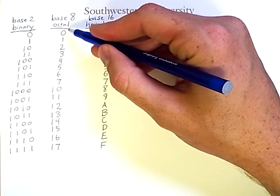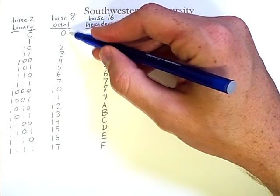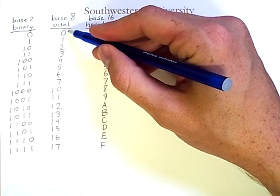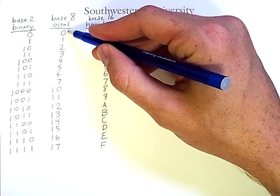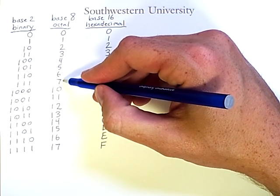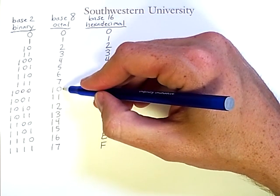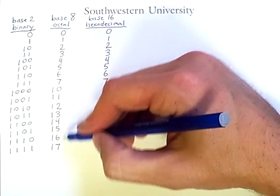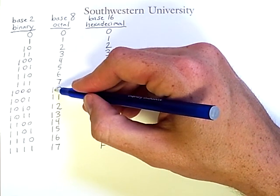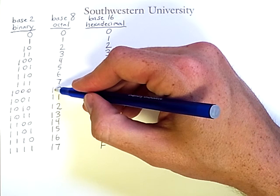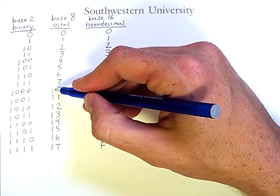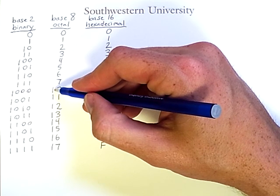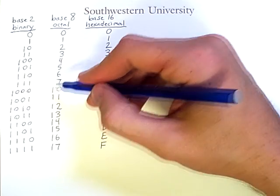Octal, or base 8, should not come as any surprise. It starts at 0, counts up to 7, and then repeats starting at 0 in the 1's column, using a 1 in the 8's column, corresponding to 1 times 8 raised to the 1.